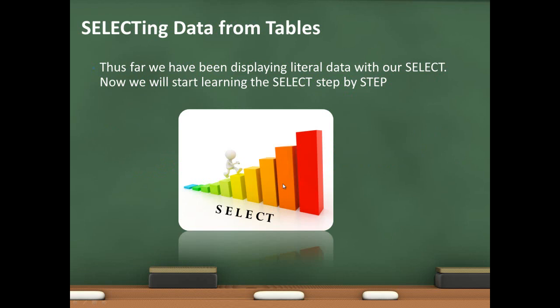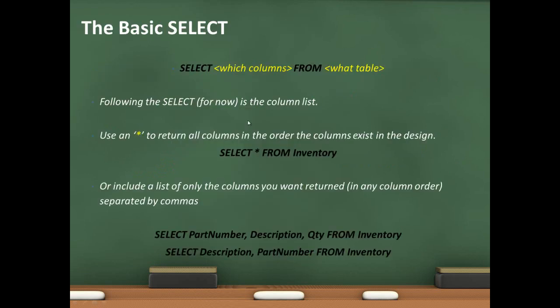Now let's look at the SELECT statement in its most basic format. The structure is: SELECT, then a list of columns from your table, FROM, and the name of the table. The most basic form is 'SELECT * FROM table' — the asterisk is a wildcard that returns all columns in the order they were originally created in the design.